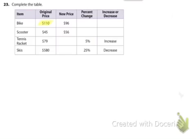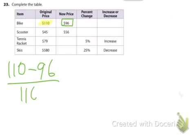For the bike, our original price we're going to highlight that, and then there's our new price. So we're going to do the change. For the bike we have change, which is 110 minus 96 over the original. We highlighted that, that was 110.